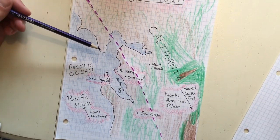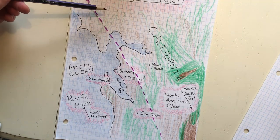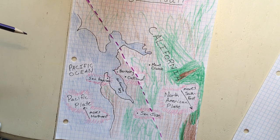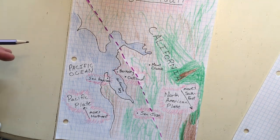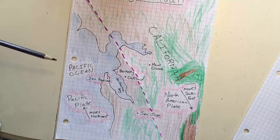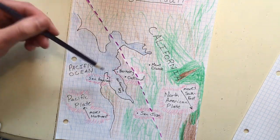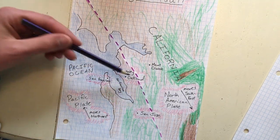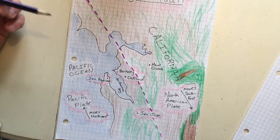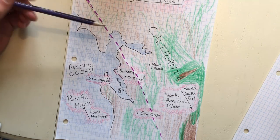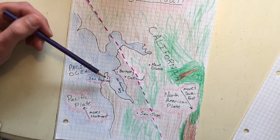The last earthquake along the Hayward fault was in 1868. It was somewhere between a 6.5 and a 7.1 on the Richter scale — because it was 1868 and they didn't have the scale then, they don't know exactly, but that's based on predictions. The epicenter was in a small town called Hayward, California, just past Oakland and San Jose — which is where the fault gets its name. About 30 people died in that earthquake and several buildings in San Jose and San Francisco collapsed as a result.